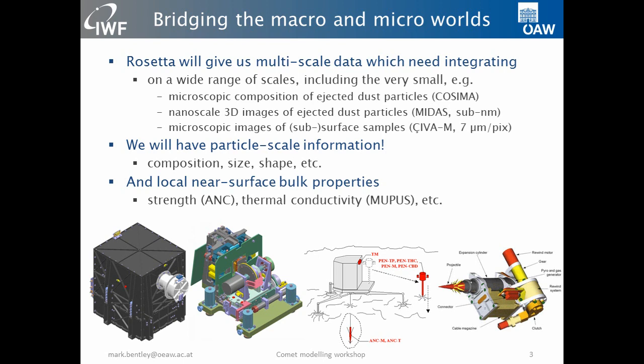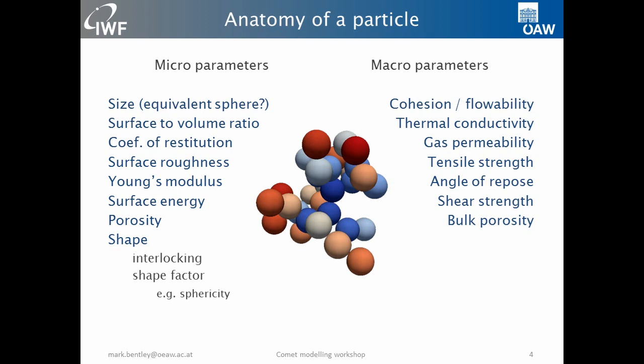So what am I talking about when I say microscopic and macroscopic parameters? The macroscopic parameters are more the things that go into global models: the strengths, the thermal conductivity, bulk porosity, and so on. Pretty much all of these parameters are in some way influenced by the actual grain-scale parameters — the real microscopic parameters for individual grains: their shape, the surface-to-volume ratio, the coefficient of restitution, surface energy. If we can measure these from Rosetta data, can we say something about how they connect to the larger scale properties?